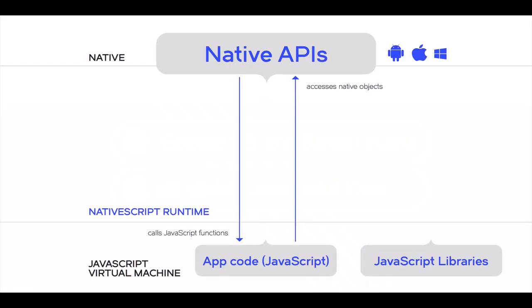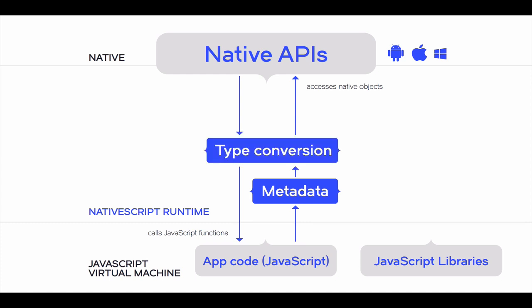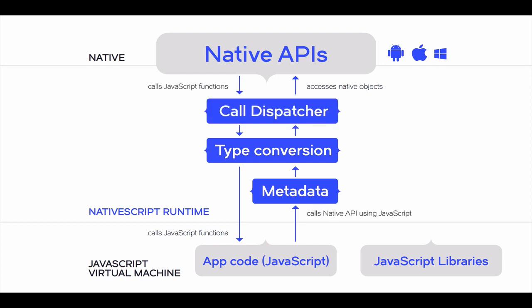The JavaScript virtual machine interprets and executes the JavaScript code. All calls to the native API are delegated to the metadata — a pre-built set of all the available APIs on each platform — which is used to look up each method and type signature. Then we have the type conversion module that handles data transfer from JavaScript to native types and in reverse. Finally, the call dispatcher makes an actual call to the native API and takes care of passing down the results.